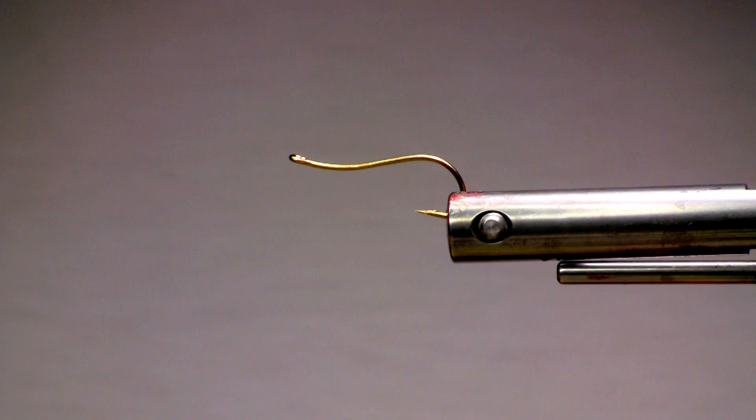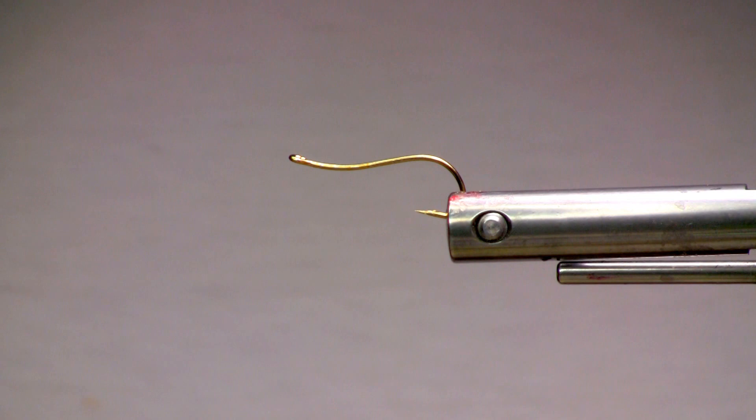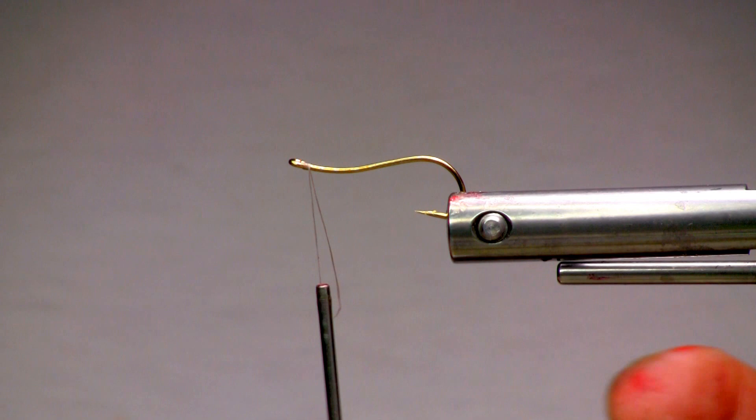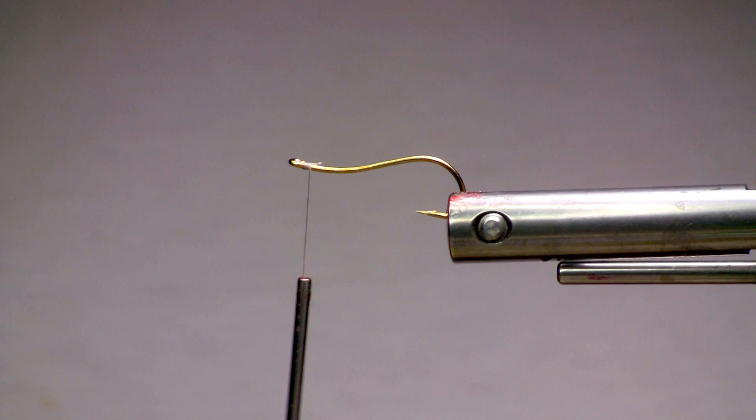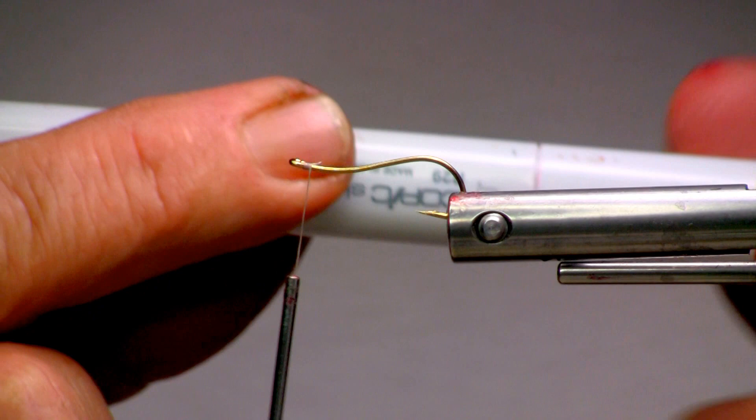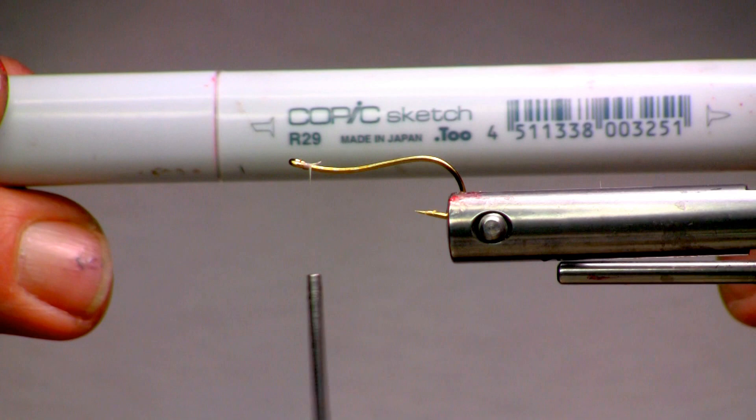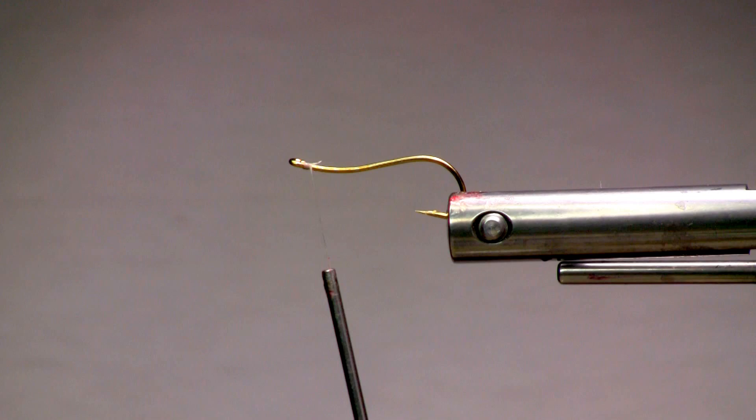So to tie this pattern, I'll just start with some 12-0 nano silk in white. I prefer that because it does disappear, if I choose it to, being a white-based material, once it's lacquered. Or I can use a Copic marker, which we'll use on this particular fly pattern quite a bit, to color up the segmentation on this chronomid larva or San Juan imitation.